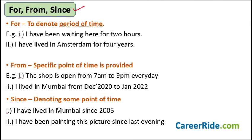Now let us move on to three very commonly confused words: 'for,' 'from,' and 'since.' The first word is 'for' — we use it to denote a period of time. 'I have been waiting here for two hours' — I've used 'for' because there is a period of time here: two hours, three hours, four years — this is a period of time. 'I have lived in Amsterdam for four years' — four years is a period of time, and I'm not talking about specific years from this time to that time.